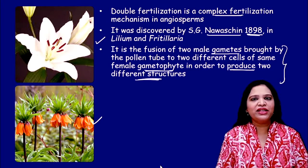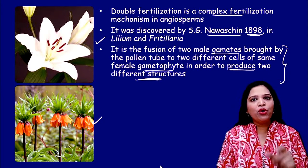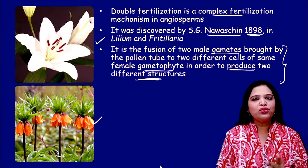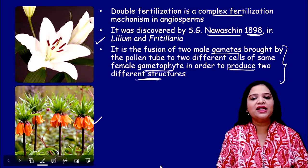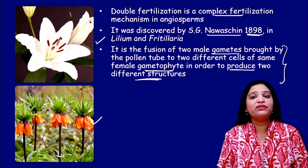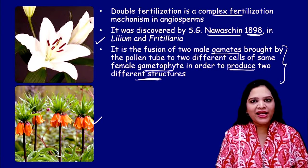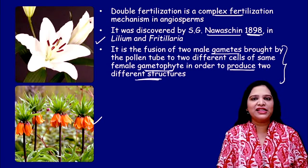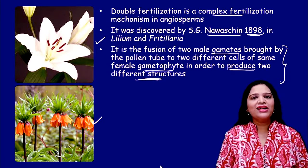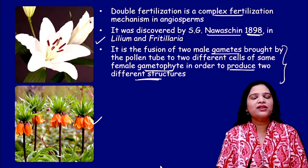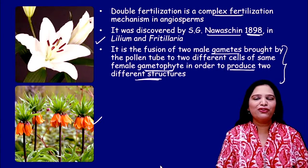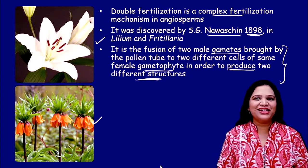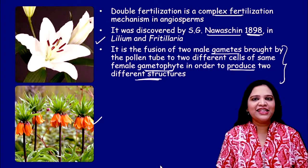In double fertilization, the pollen tube brings two male gametes. These two male gametes are going to fertilize two different cells of the same female gametophyte, because they are going to form two different structures — that is the ultimate goal of double fertilization. One results in the zygote, and another fertilization results in endosperm formation. These are the two different structures which result from double fertilization.